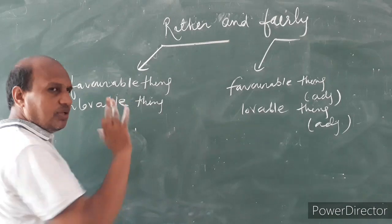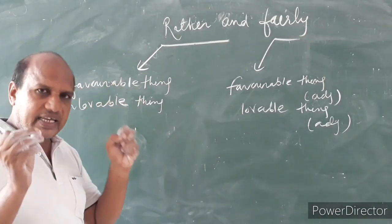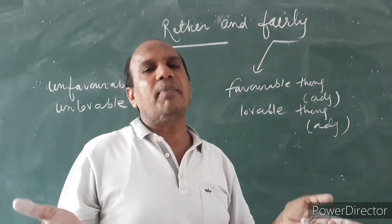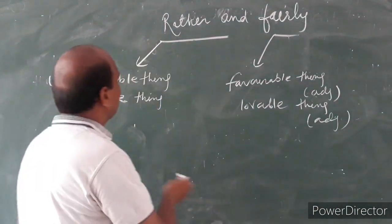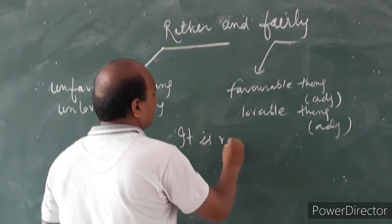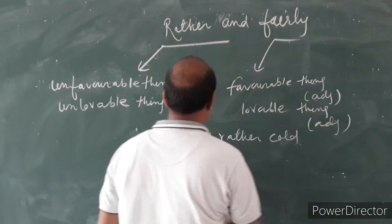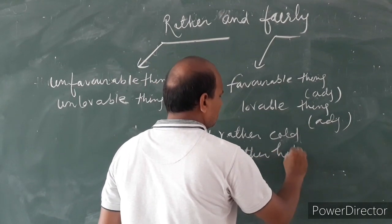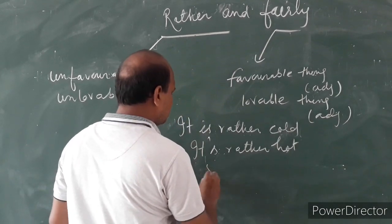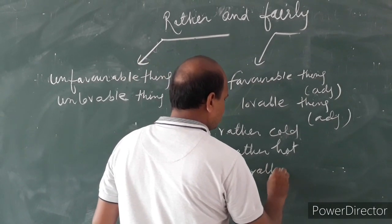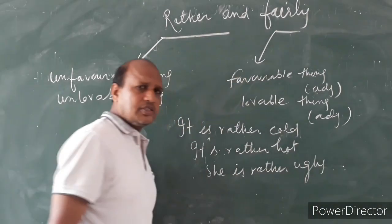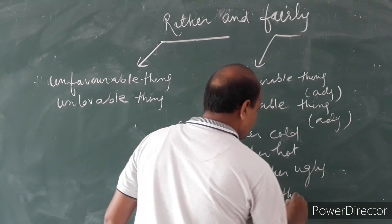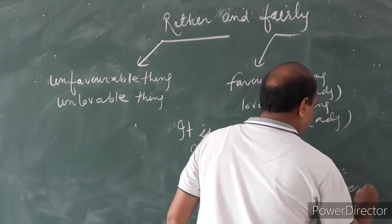Rather is used with unfavorable thing or adjective, or unlovable thing or adjective. Let me explain in detail with some examples. Rather is used with adjective which is negative or which we don't like. For example, it is rather cold, it's rather hot, and she is rather ugly. Understood? It is rather awkward.